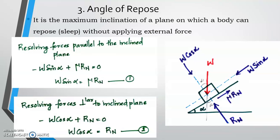Angle of repose is the maximum inclination of a plane on which a body can repose without applying an external force. It is the angle of the inclined plane on which the body can rest.